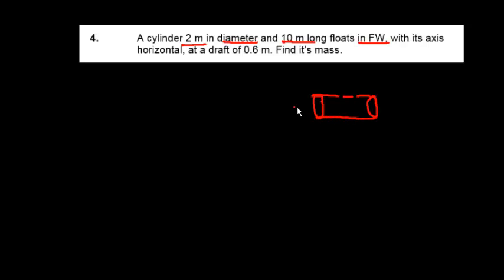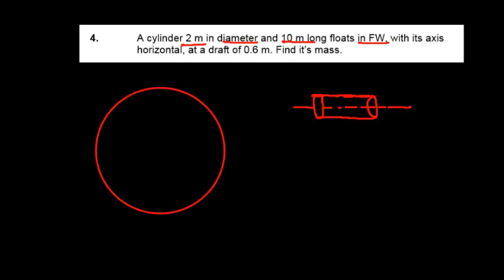Next problem: a cylinder 2 meters in diameter and 10 meters long floats in fresh water with its axis horizontal. The axis of the cylinder is horizontal, and it is floating at a draft of 0.6 meters. We need to find its mass. The diameter is 2 meters, so the radius is 1 meter, and the center is labeled O.